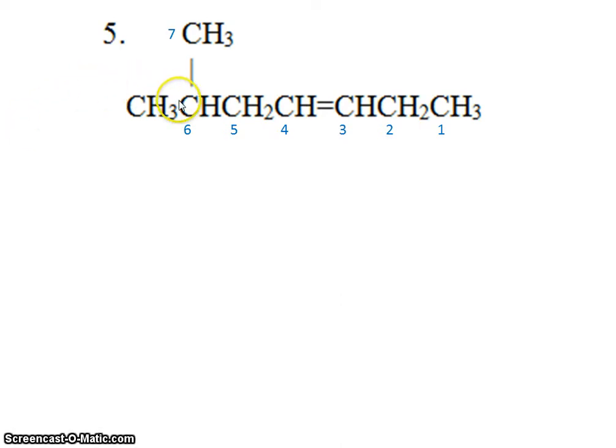So our methyl group is located off carbon number 6. And our double bond is at carbon number 3. The double bond, of course, is between carbon 3 and carbon 4.